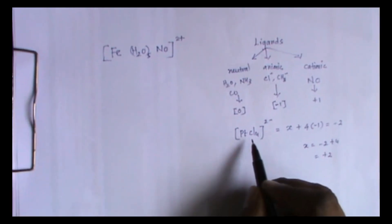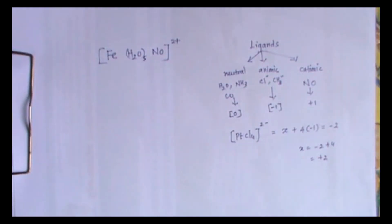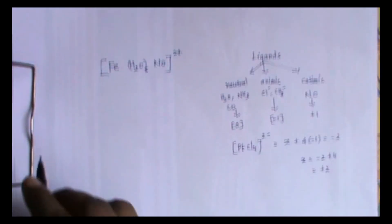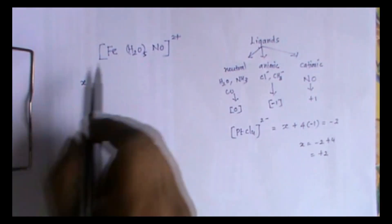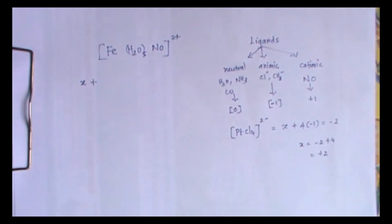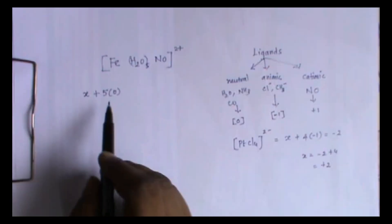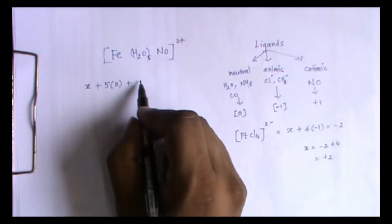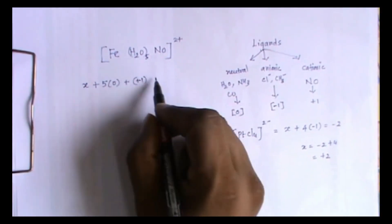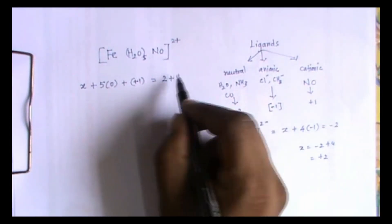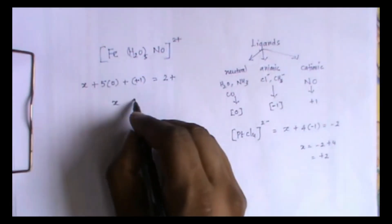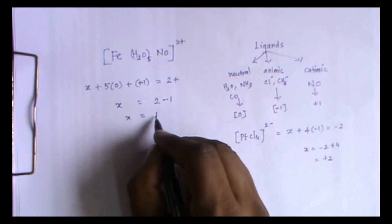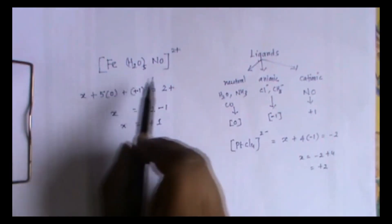Here Cl is anionic ligand so I have taken minus 1. NO is cationic ligand so I have to take plus 1. To find out the oxidation state for Fe I take x. There are 5 water molecules so I put 0 since it is neutral. Only one nitrosyl is there so it is plus 1. The other side plus 2. x will be 2 on the other side, it will become minus 1. So x is equal to plus 1. The oxidation state of iron in this species is plus 1.